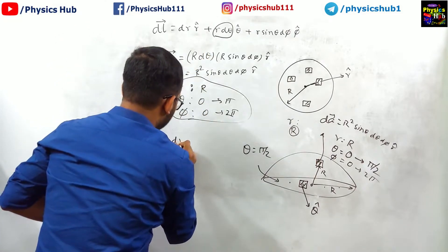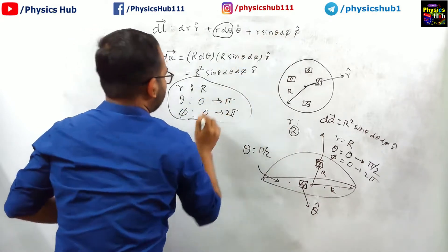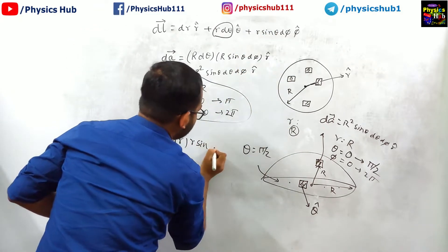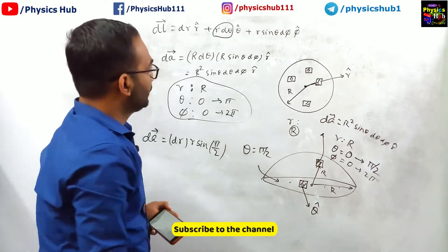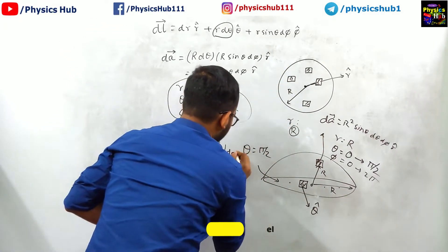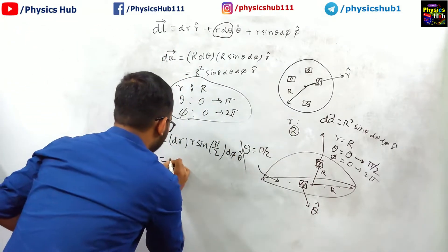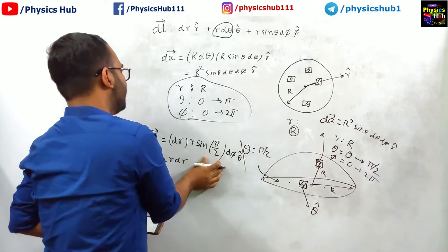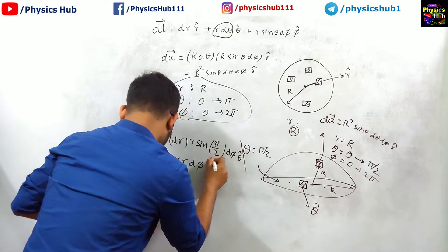dr is dr, no issue in that. r d theta is not contributing, 0. r sin theta d phi, r sin theta, theta value is pi by 2. So you have to put the value pi by 2 and d phi will remain d phi and the direction is theta cap. So ultimately you are getting r dr, sin pi by 2 is 1, so the area element r dr d phi theta cap.